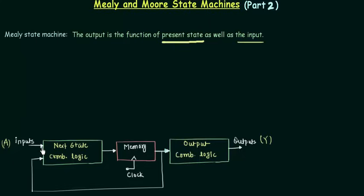So there is a small change to make it the Mealy state machine. I will take this input from here and I will give it to this output combinational logic. Now you can see the output is the function of the present state as well as the input. So this is a Mealy state machine.